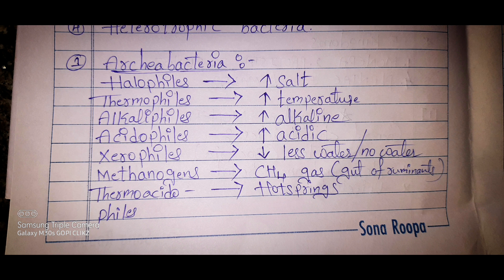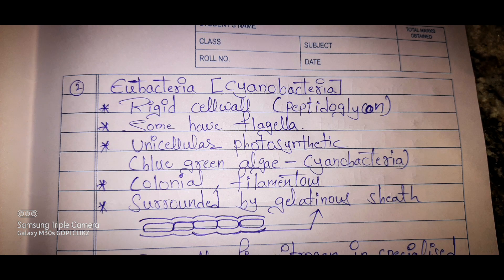The second class is Eubacteria, also called cyanobacteria. Their general characteristics include: they have a rigid cell wall made up of peptidoglycan, and some have flagella. Flagella is a locomotory organ that helps in moving from one place to another. These are unicellular and photosynthetic — they can prepare their own food using sunlight. Blue-green algae is the best example of unicellular photosynthetic organisms, also known as cyanobacteria, and is the first organism to appear on Earth. Some eubacteria live in filamentous form and some in colonial form.